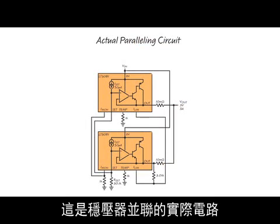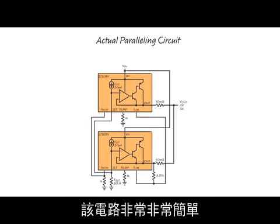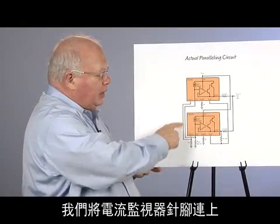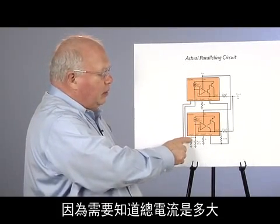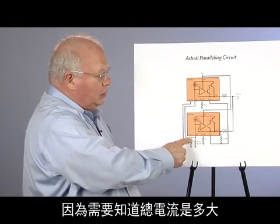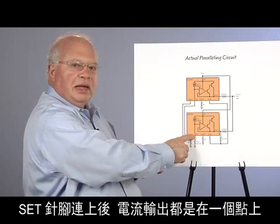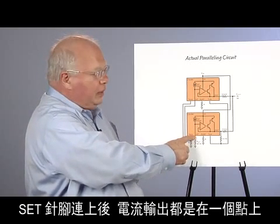Here's the actual circuit for paralleling regulators. It's very simple. We tie the monitor pins together for the current monitor because we want to know our total current. The set pins are tied together so that the outputs are at the same point.